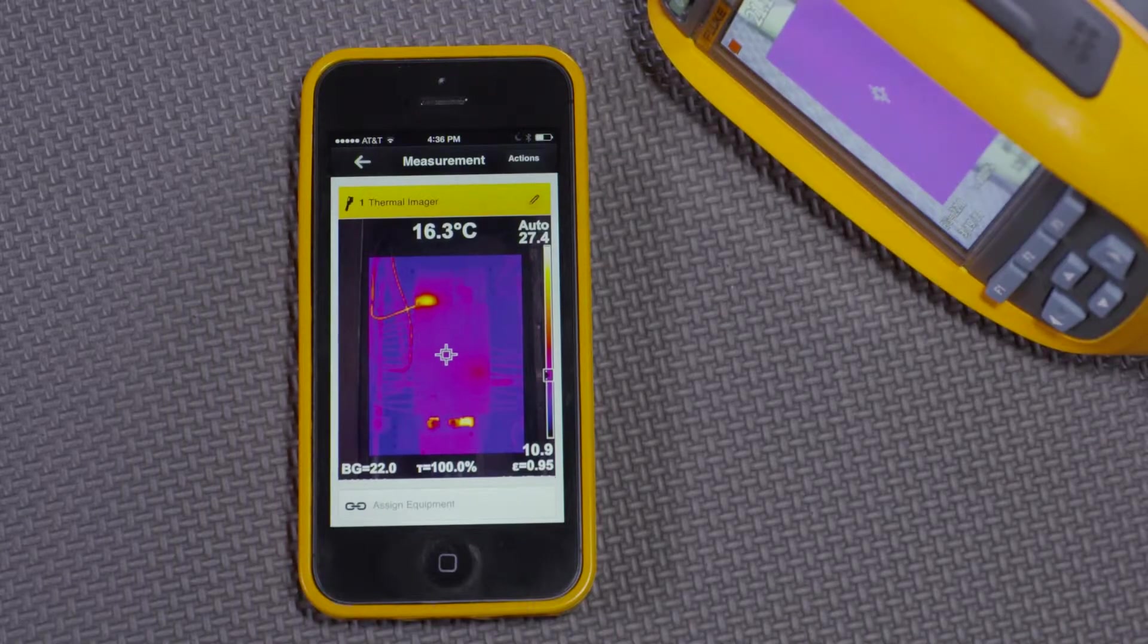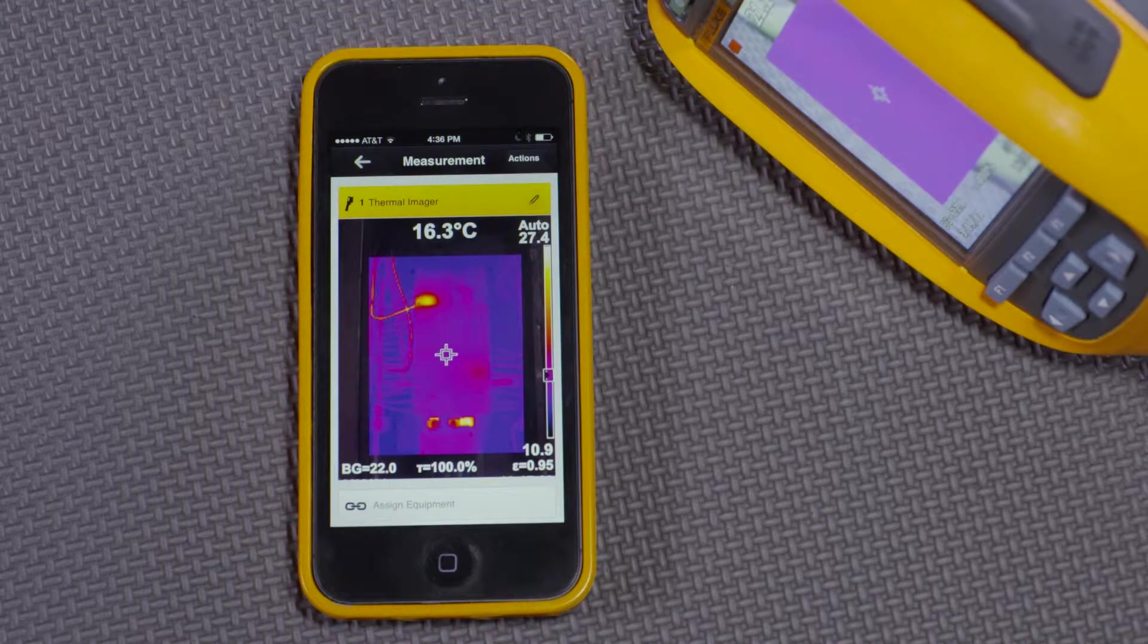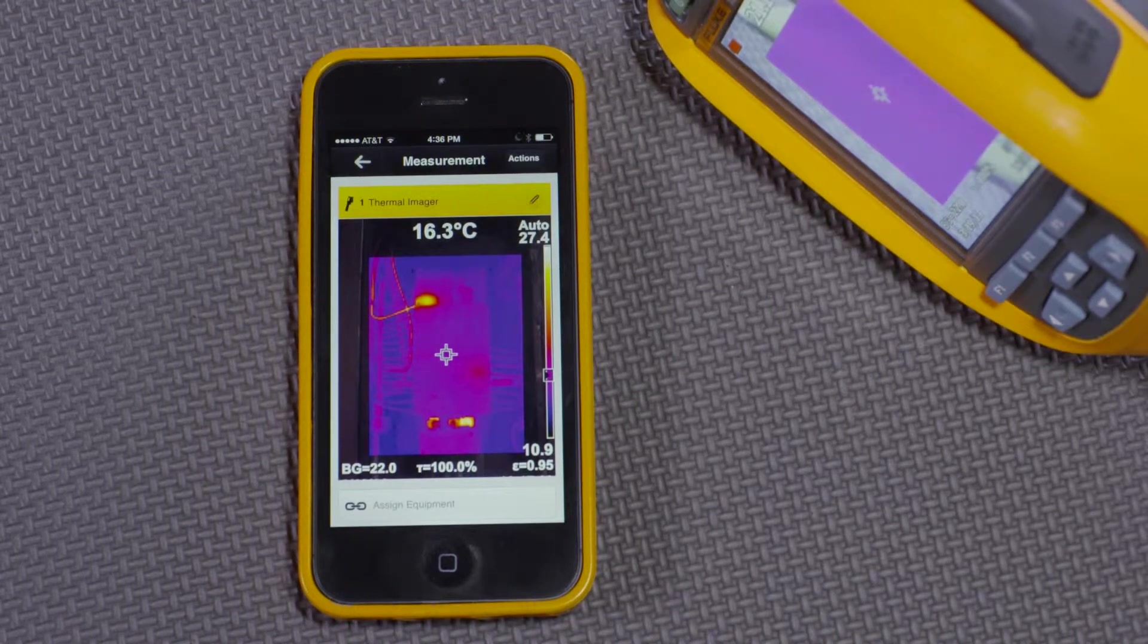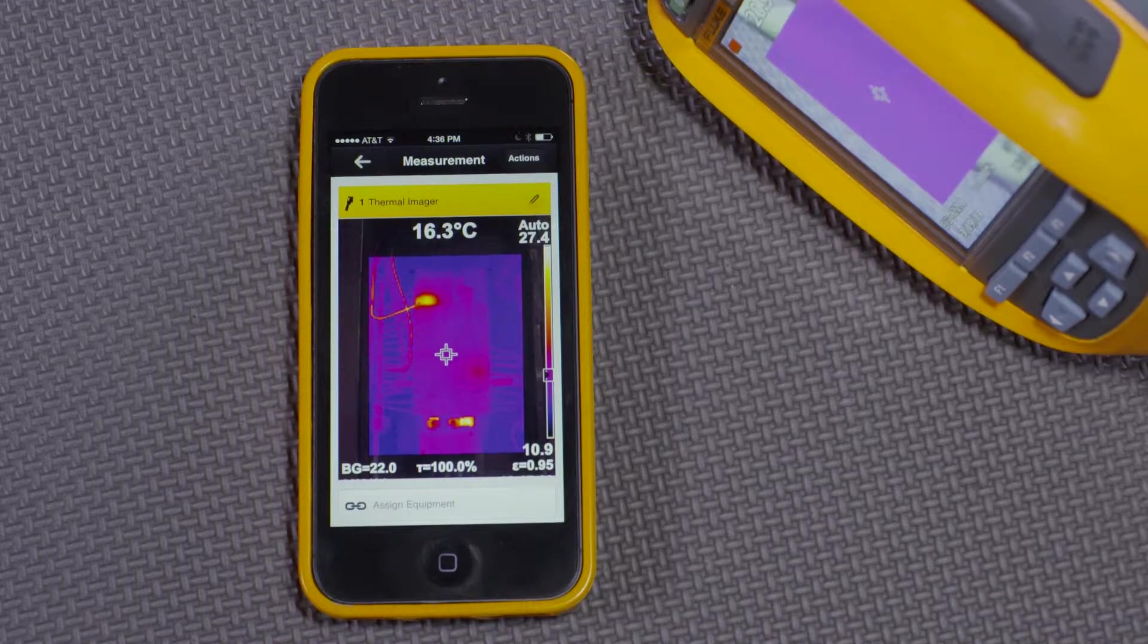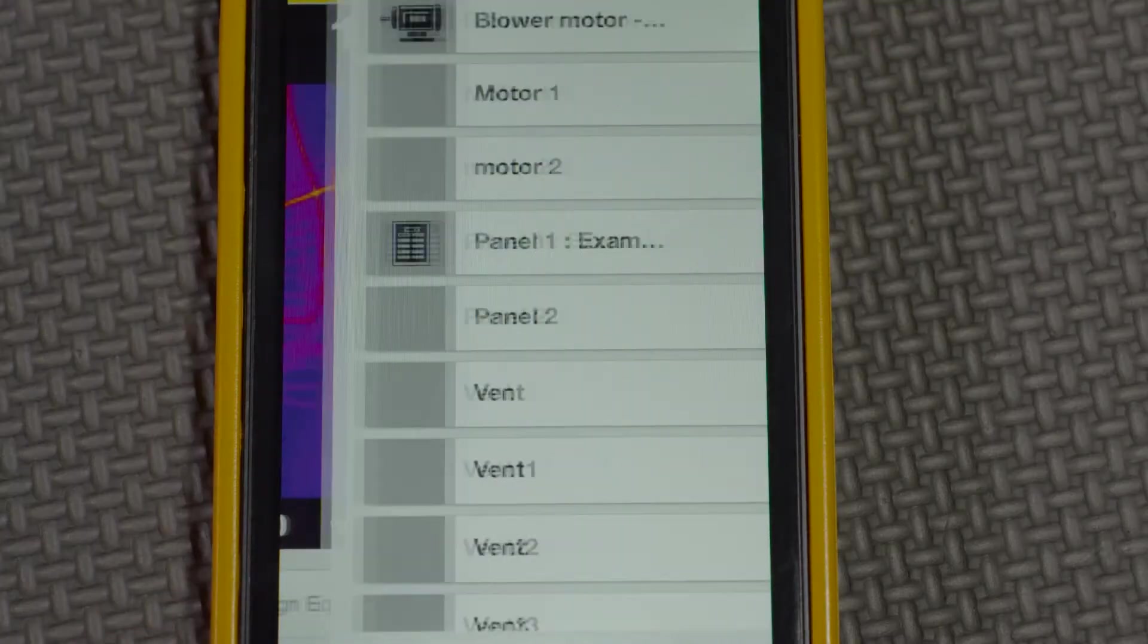What I have here is a thermal imager paired with the Fluke Connect app. I've taken several images and saved them. I'll associate this thermal image with a piece of equipment like panel 1 and save it.